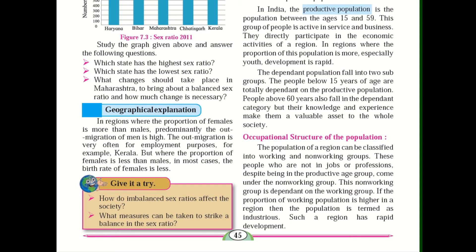In regions where the proportion of this productive population is more, especially youth, development is rapid — if there are more youth, development takes place very fast. The dependent population falls into two subgroups: people below 15 years of age are totally dependent on the productive population, and people above 60 years also fall into the dependent category. But their knowledge and experience make them a valuable asset to the whole society.